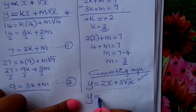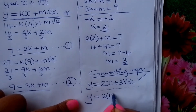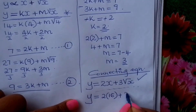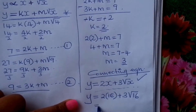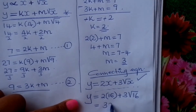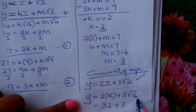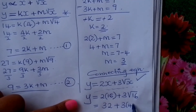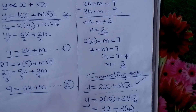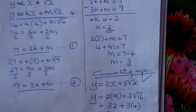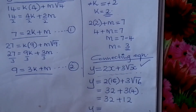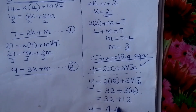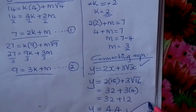The question asks: find Y when X is 16. Substituting into the connecting equation: Y equals 2 times 16, plus 3 times the square root of 16. This gives 32 plus 3 times 4, which is 32 plus 12. So Y equals 44 when X is 16.